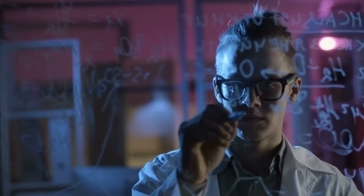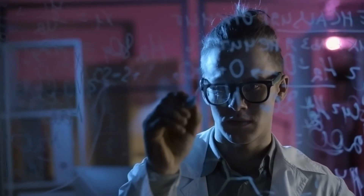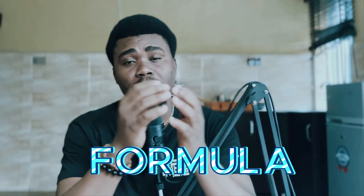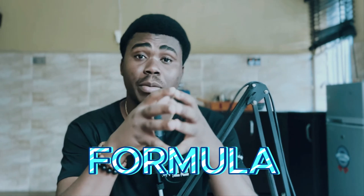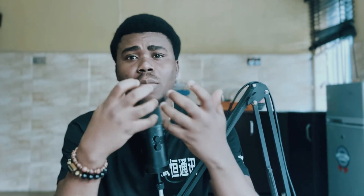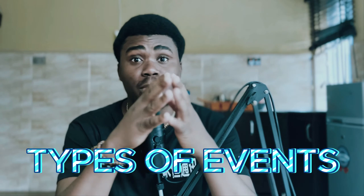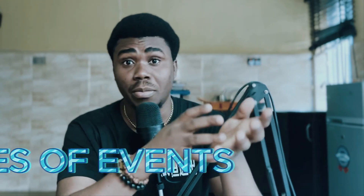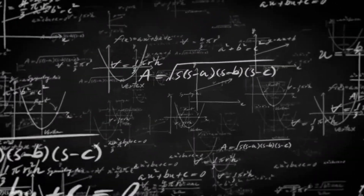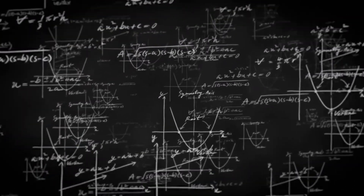Hello everyone and welcome to another YouTube video. In today's video we are going to be taking a mathematical approach to the concept of probability. I'll be giving you the formula we use to calculate the probability of an event, and I'll also talk about the four types of events in statistics and probability: mutually exclusive, mutually inclusive, dependent events, and independent events. For each of those events I'll be giving you the mathematical formulas and the mathematical statement that defines them.